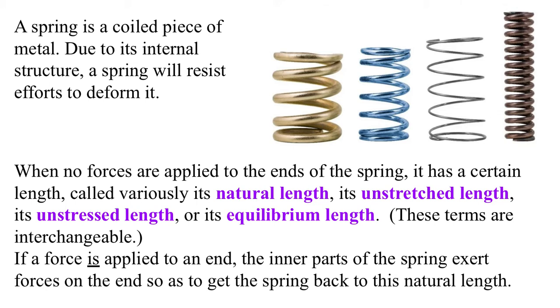When no forces are applied to the ends of the spring, it has a certain length, which we call its natural length, or its unstretched length, or its unstressed length, or its equilibrium length. These terms are interchangeable, and people just go with whichever one they want.